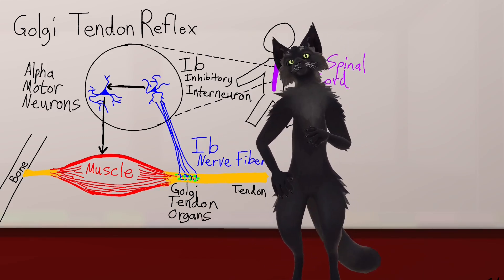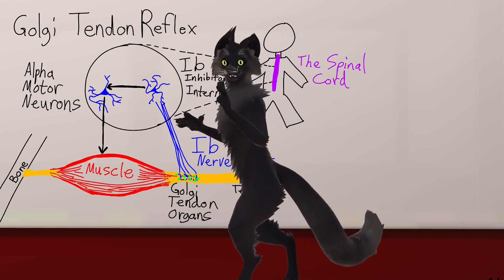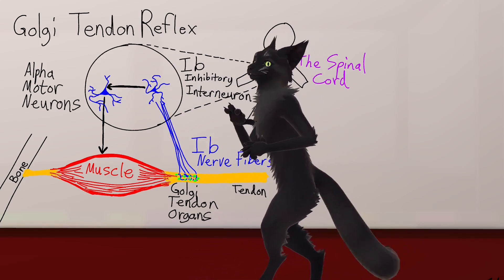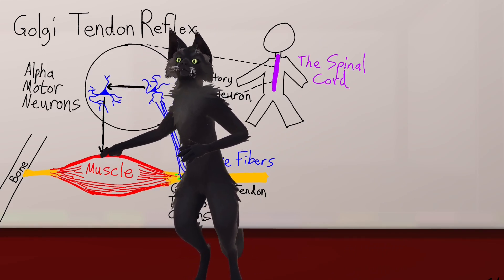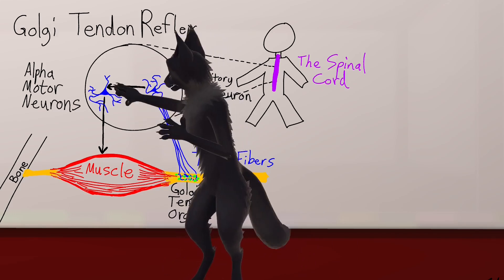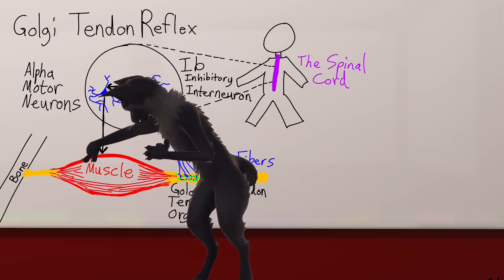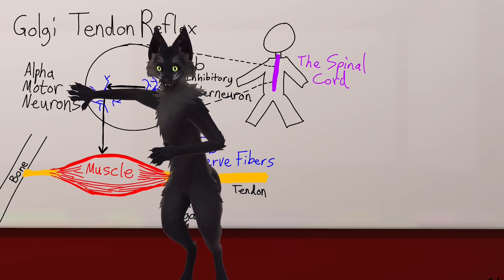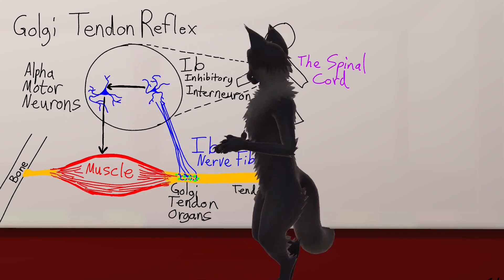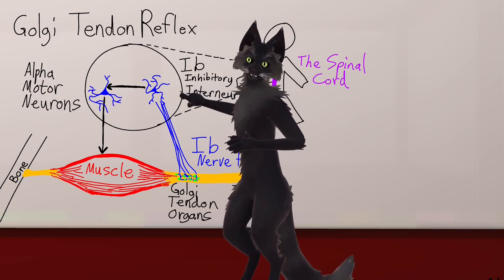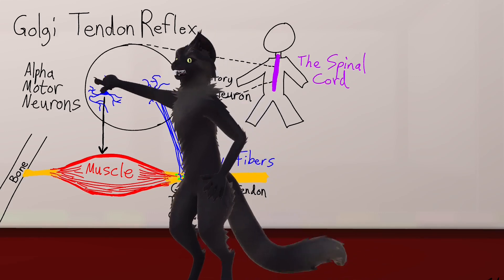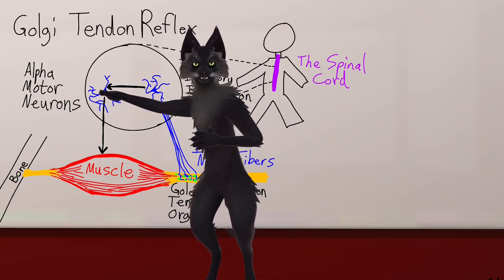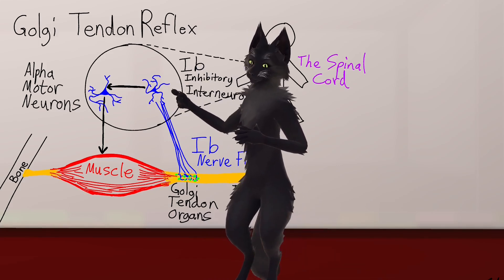Inside of the spinal cord there are two types of neurons we're interested in today: the alpha motor neurons and the 1b inhibitory interneurons. The alpha motor neurons connect to the muscles. When the alpha motor neurons activate they emit an action potential, and that electric pulse travels through the entire muscle strand and causes the whole muscle strand to contract. Every time you move your muscles, that's your alpha motor neurons talking to the muscles. The 1b inhibitory interneurons, when activated, stop the alpha motor neurons from activating — they inhibit them. So the alpha motor neurons make your muscles contract and the 1b inhibitory interneurons make your muscles release.